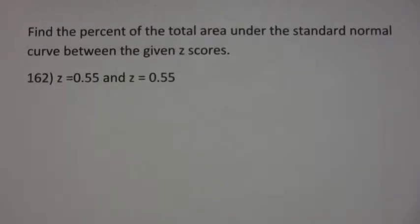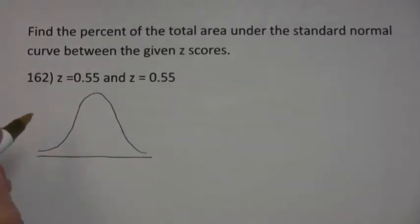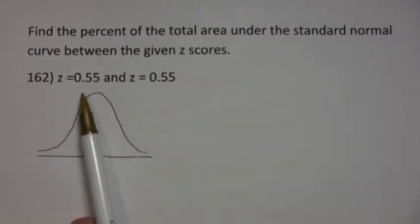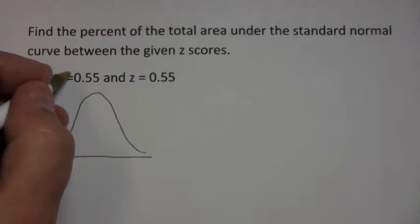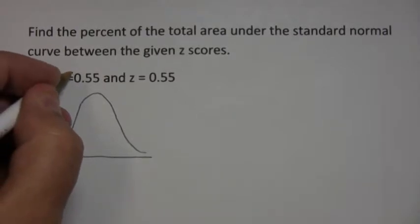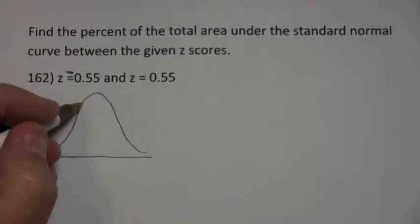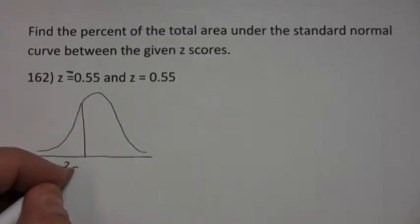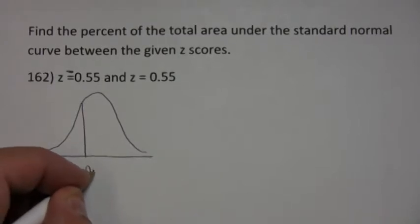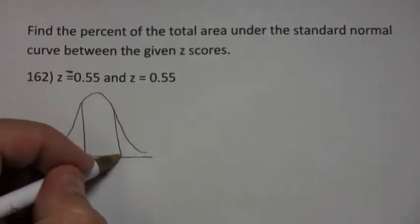Find the percent of the total area under the standard normal curve between the two z-scores. Again, if you want to sketch the picture just to give yourself more confidence, you can. It seems like here that's also a negative 0.55. You need to be more careful. So, you've got z equals negative 0.55 and positive 0.55.